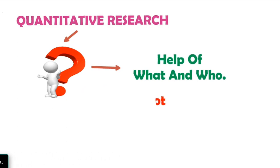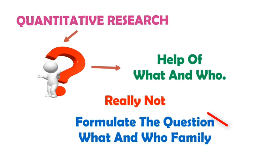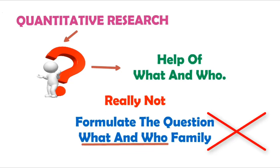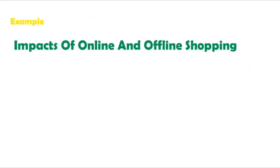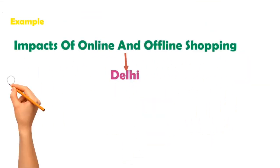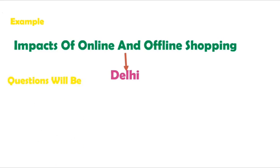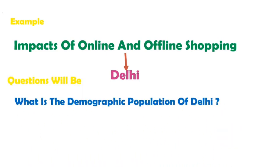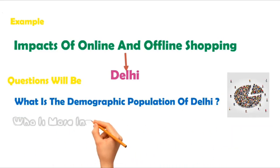Again, it's not always important to formulate questions related to the 'what' and 'who' family. Now let's take an example — our research topic is 'Impacts of Online and Offline Shopping in Delhi NCR.' So the questions will be formed like: what is the demographic population of Delhi NCR,